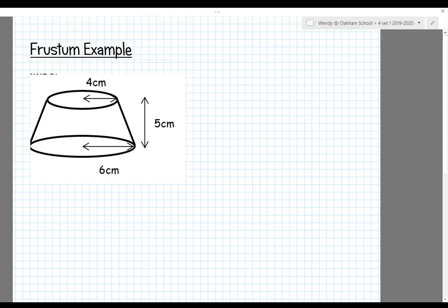For this example, what we're trying to do is work out the volume of this frustum. What we need to do is imagine that there's another little cone on top.